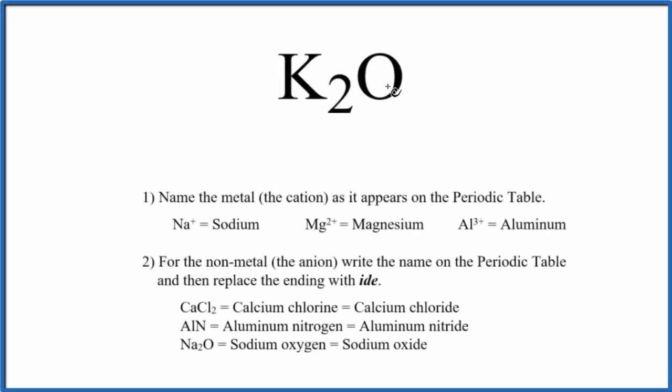To write the name for K2O, we first need to recognize that this is an ionic compound. That's because we have a metal and a non-metal. When we have a metal and a non-metal bonded together, it's an ionic compound.